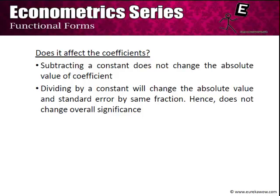This concludes our discussion of functional forms. Two things are important: first, knowing when to use which functional form — for instance, if you want to find the elasticity between two variables, use a double log model. Second, knowing the correct interpretation of slope coefficients — for example, in a lin-log model the slope coefficient represents a percentage change in x causing a unit change in y.